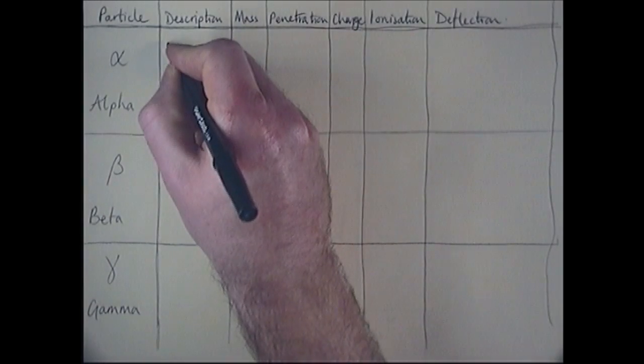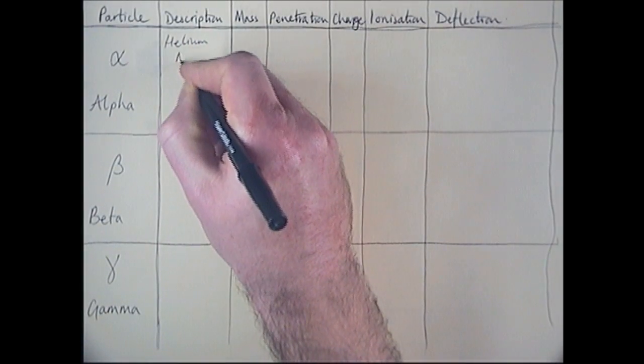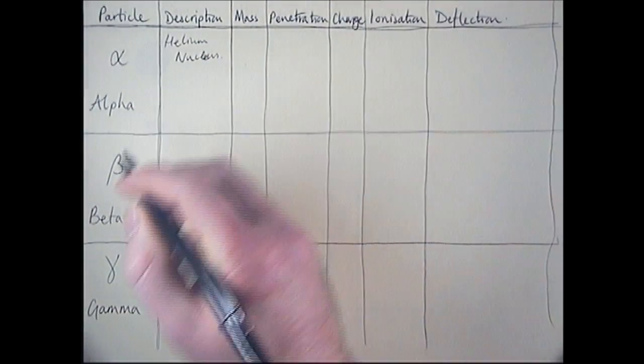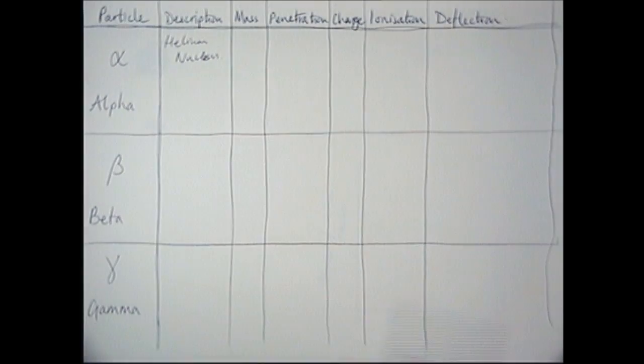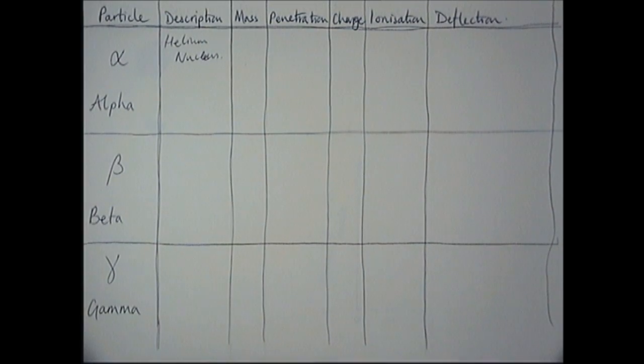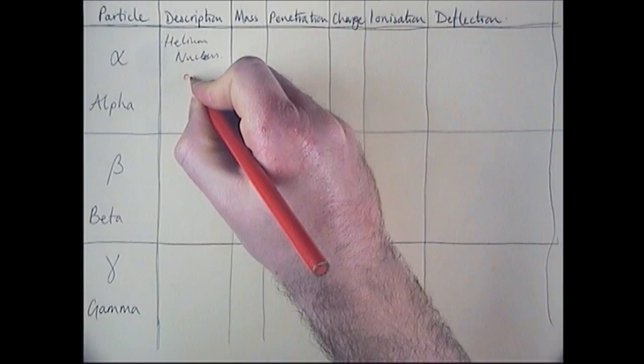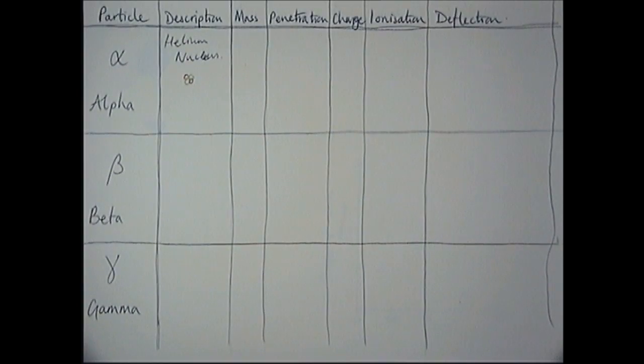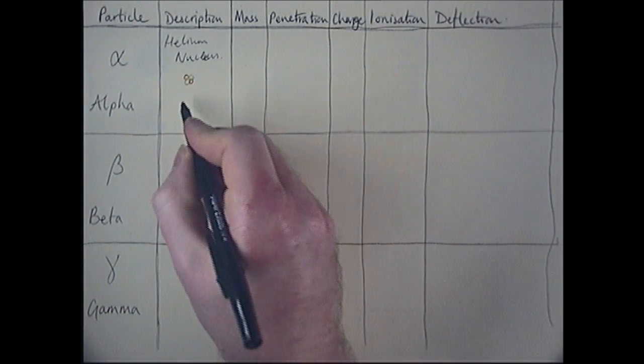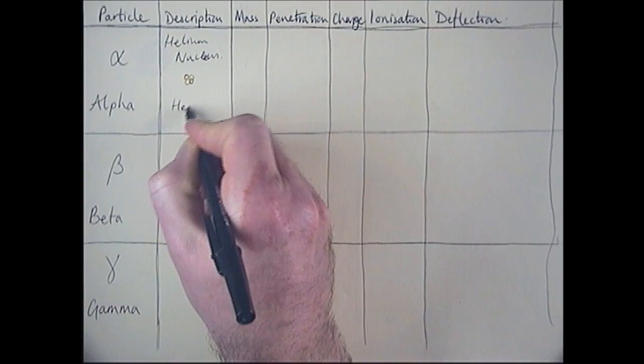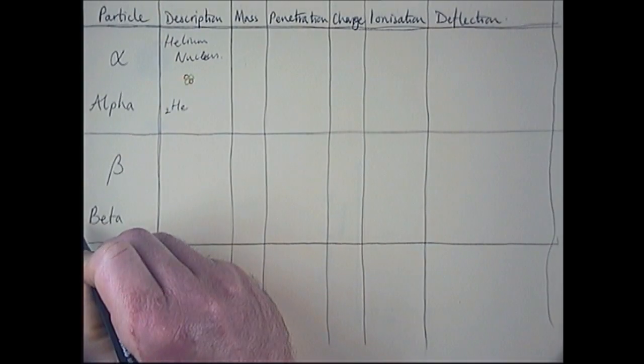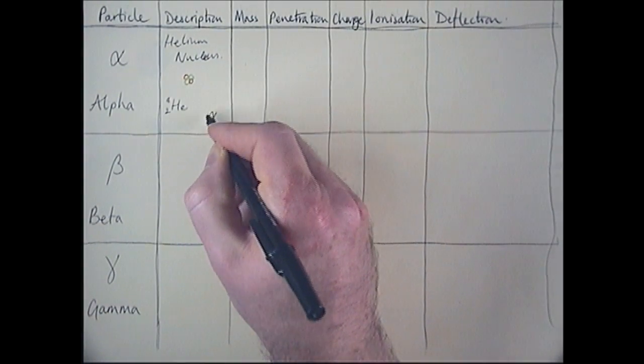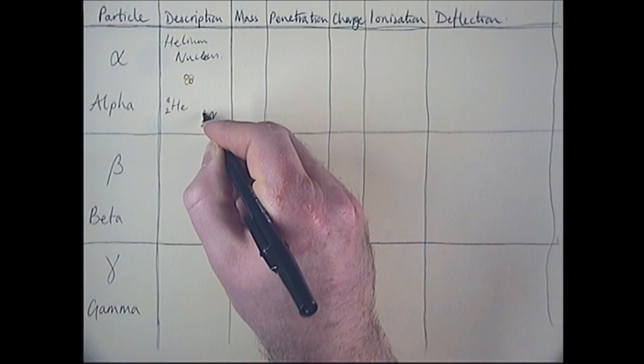So an alpha particle is actually a helium nucleus. It is two protons and two neutrons. That's the alpha particle, that's what it would look like. It could be written in notation as He, and then with two, remember that denotes two protons, and four, that's its total mass. Or we could write it as the alpha particle, that sort of squiggly alpha symbol, with the same notation, two protons and four nucleons.